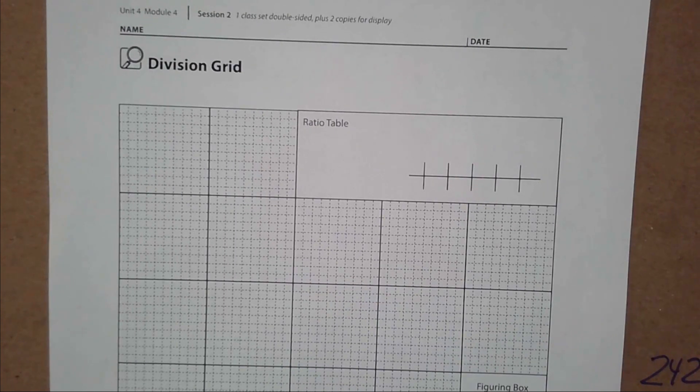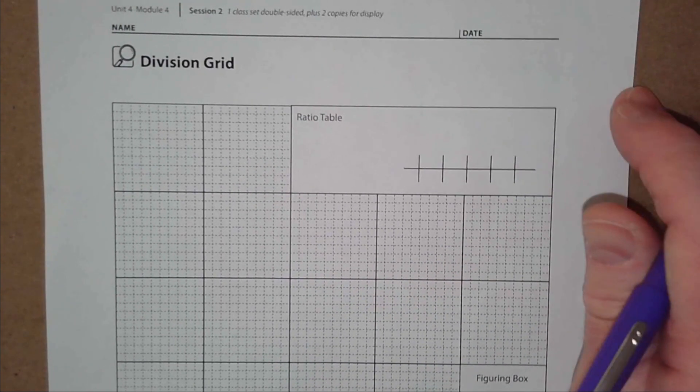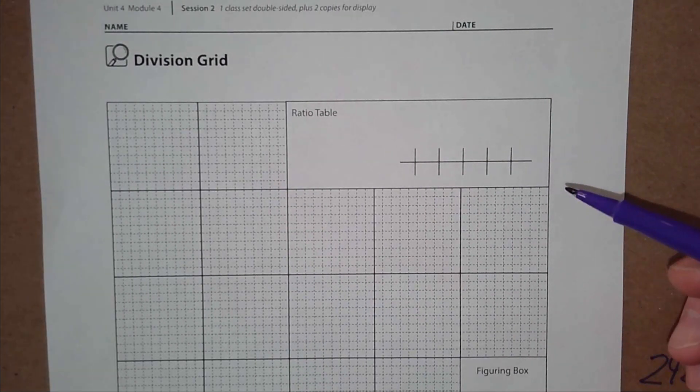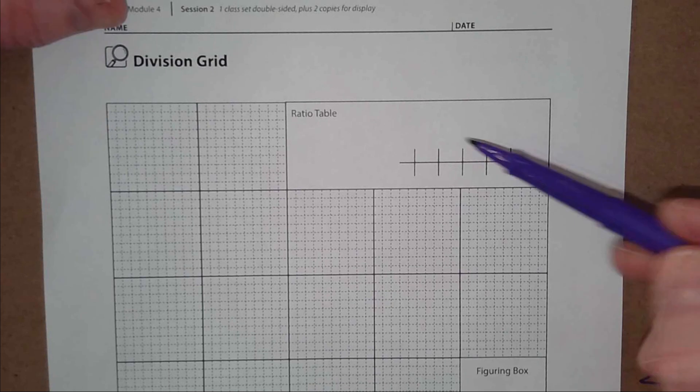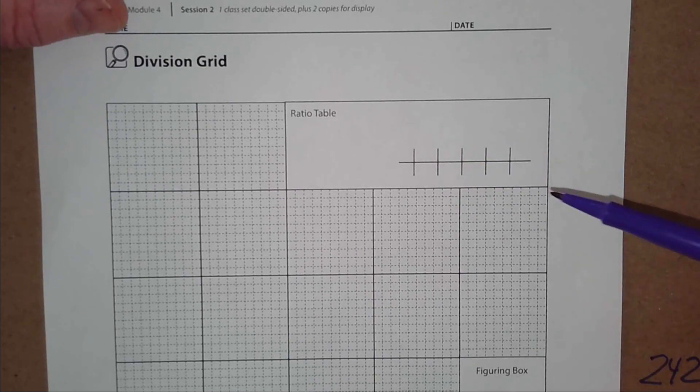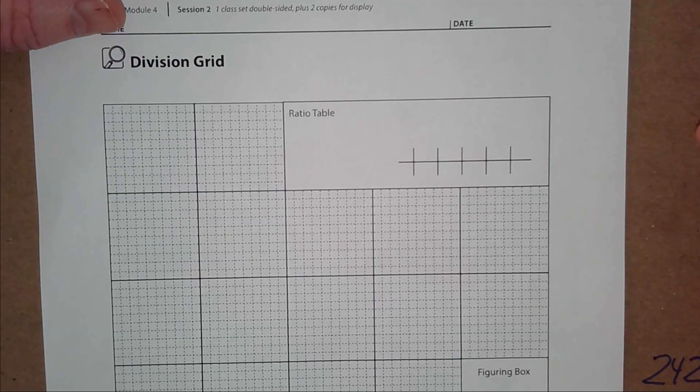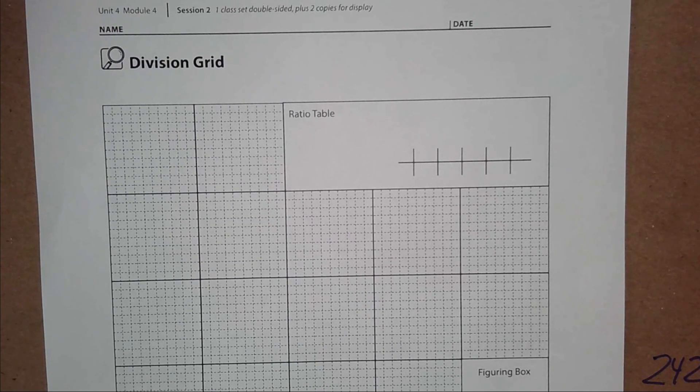We're going to do it slightly different. We're going to use a ratio table here, and we're going to do a couple together. No, you're just watching, just participating right now. We're going to fill out a ratio table, and as we do our ratio table, we're going to make some groupings on our grid sheet. We don't need any paper flipping.